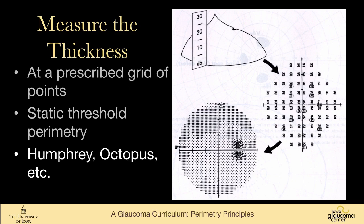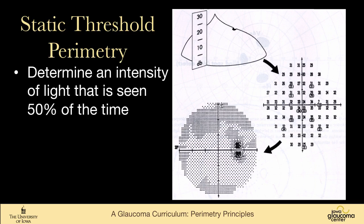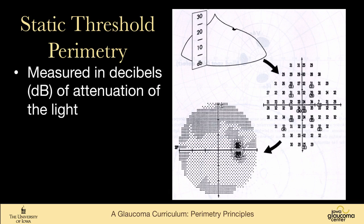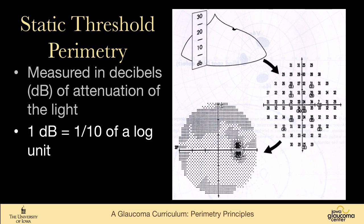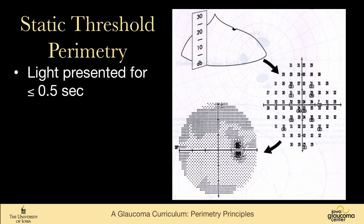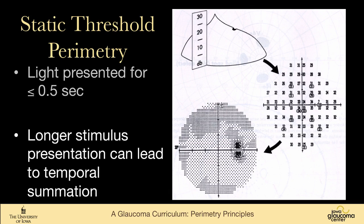This is what happens in the Humphrey, the Octopus, and other static threshold perimeters — they're basically trying to find the intensity of light seen half of the time, and that's the threshold. It's measured in decibels of attenuation of the light. The light is 10,000 apostilbs. A point with a value of 31 means the light is attenuated by 31 decibels and is still seen half of the time. One decibel is about a tenth of a log unit. The light is presented for less than half a second — longer stimulus time leads to summation and invalidates results.